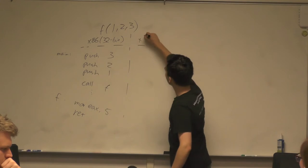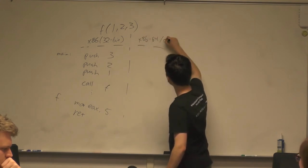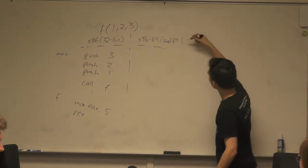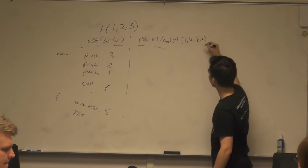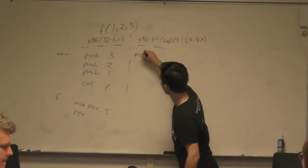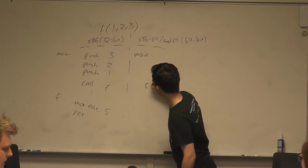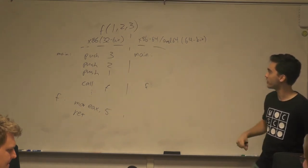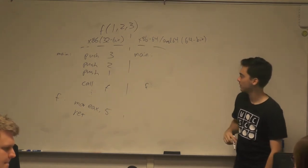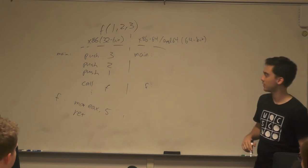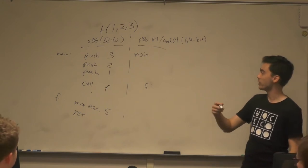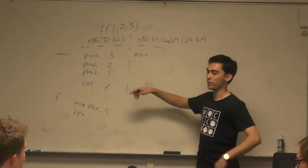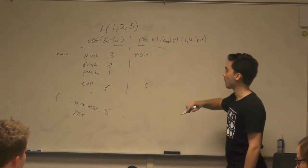On x86-64, or AMD64, which is obviously a 64-bit architecture — does anybody remember what's different about the calling convention on x86 versus AMD64? The key difference is that we do use some registers on AMD64. On just x86, we use the stack for all of the arguments.